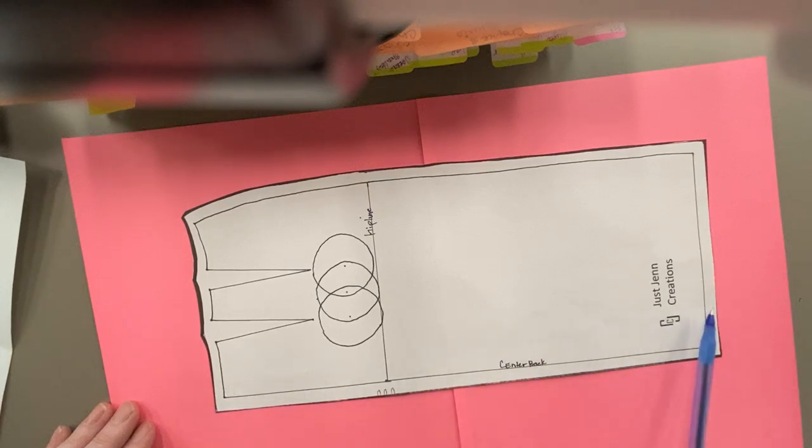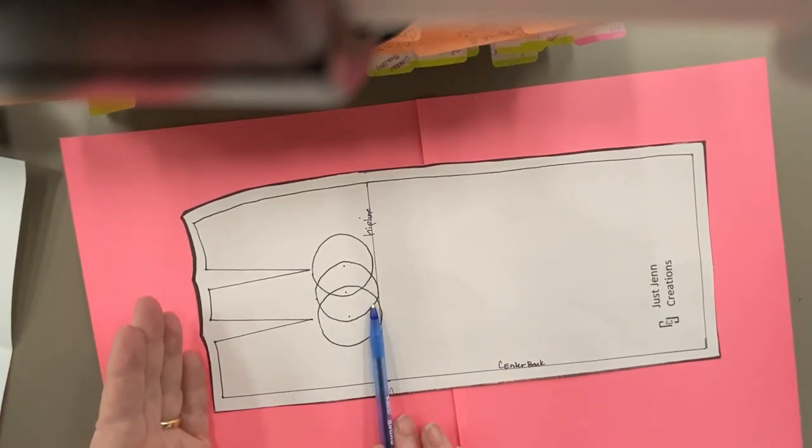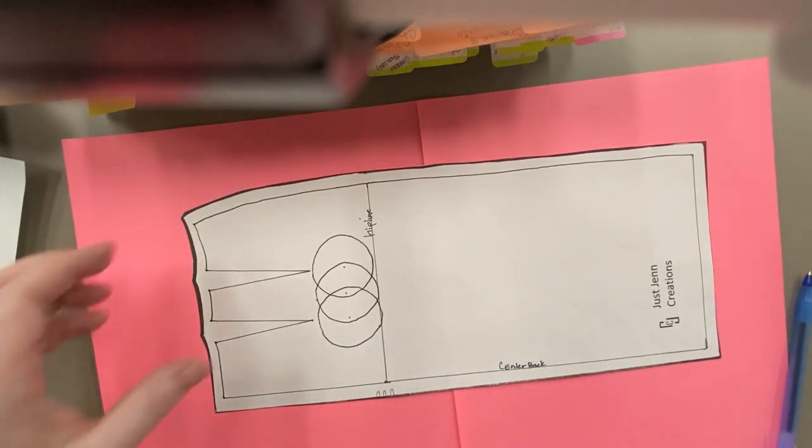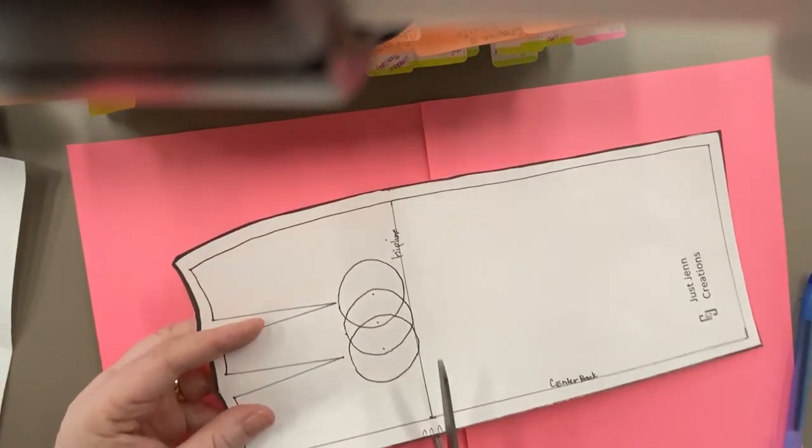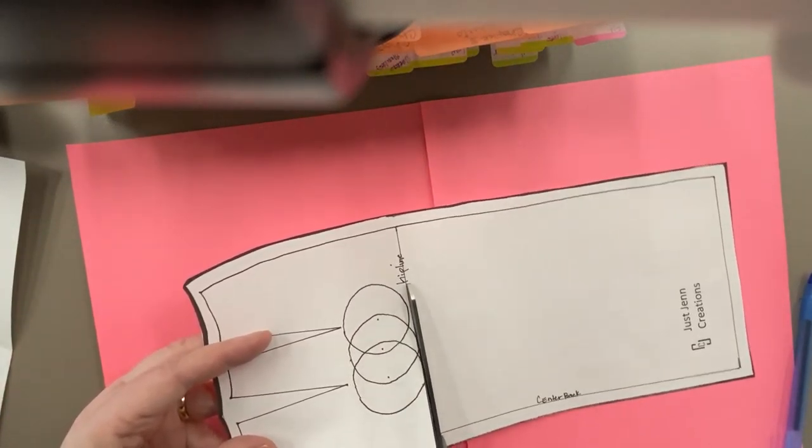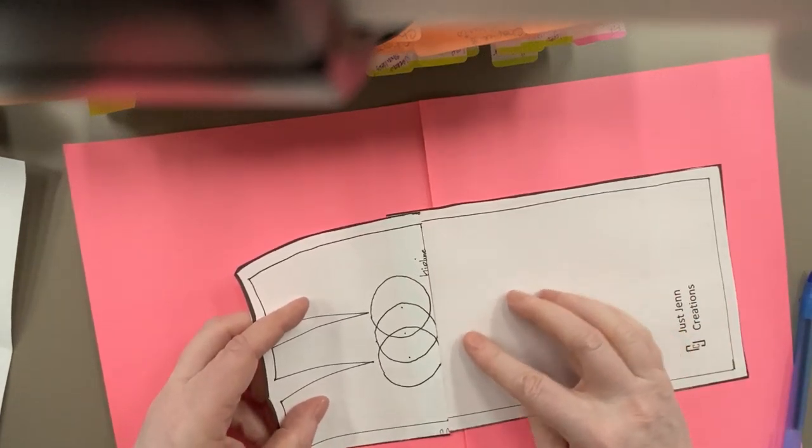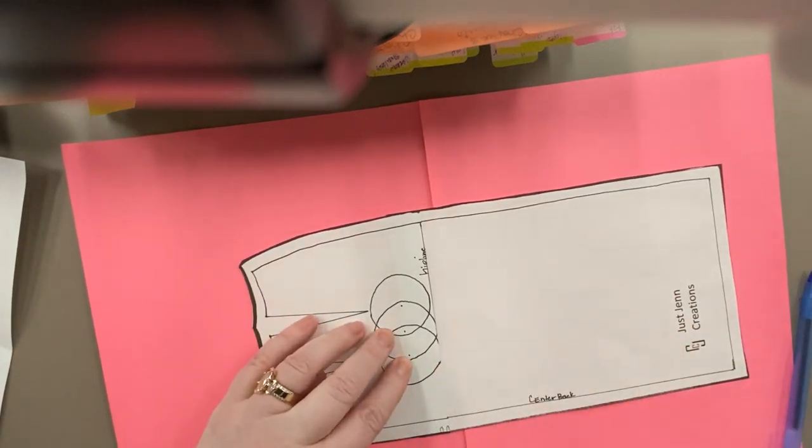So we need to shorten this skirt, but we need to shorten it from waist to hip, not in length. And the best way to accomplish that is you just cut it off at the hip line and you reattach.